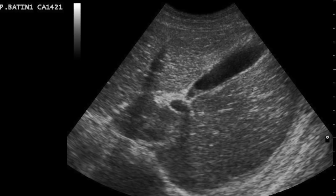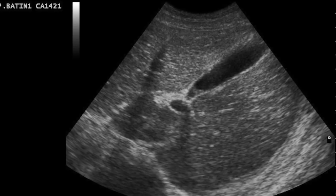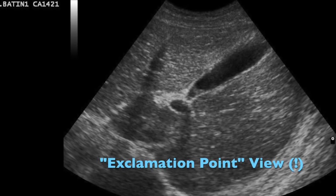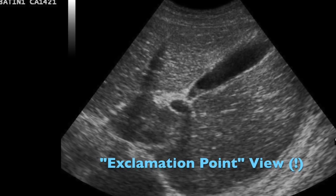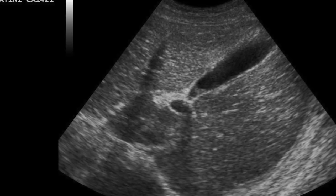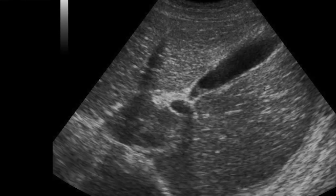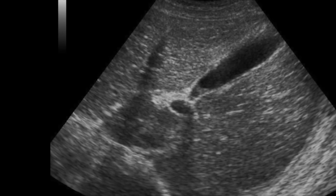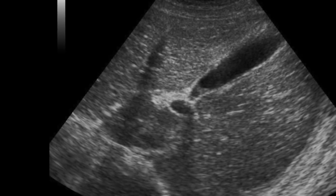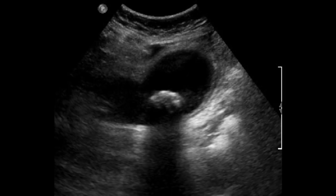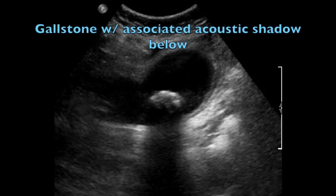The view that best visualizes the gallbladder is the exclamation point view — the dot of the exclamation is the portal vein and the gallbladder is the long bulbous shape to the right. This is a picture of a normal appearing gallbladder with no gallstones inside. On ultrasound imaging for cholecystitis, the first thing you're looking for is simply gallstones within the gallbladder.